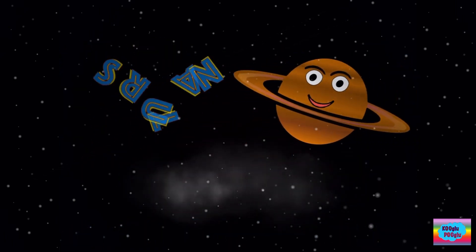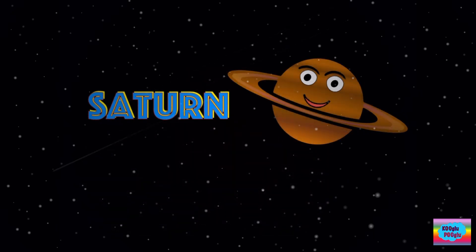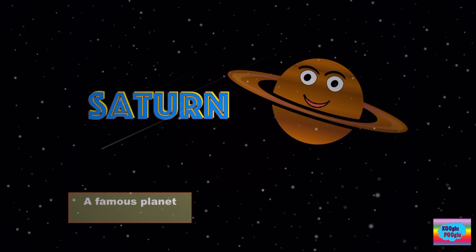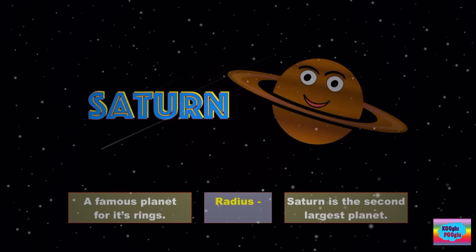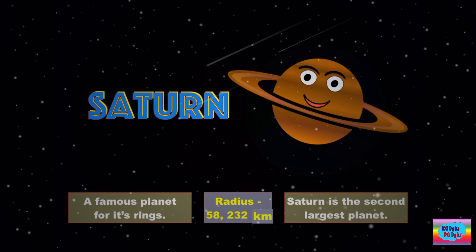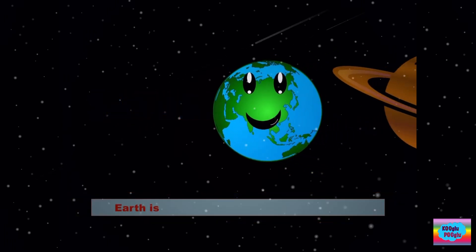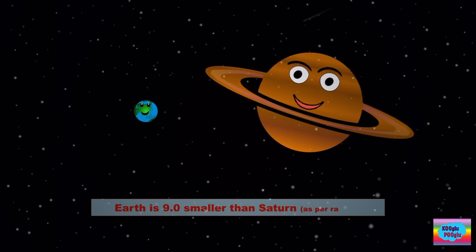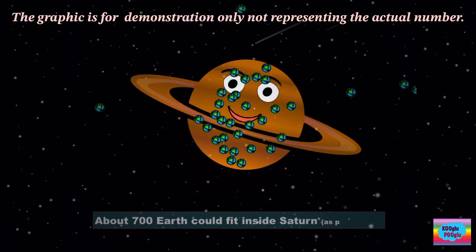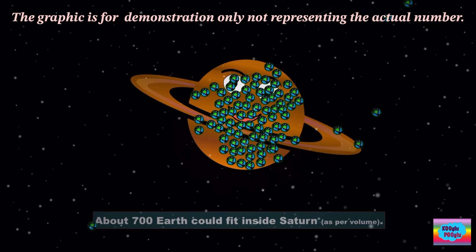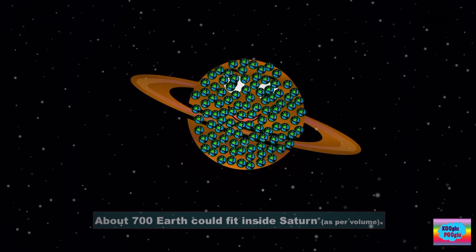Planet 7, Saturn. Hello! I am famous for my rings. Saturn is the second largest planet. I am really big. Radius 58,232 kilometers. Earth is nine times smaller than Saturn. About 700 Earths could fit inside Saturn. Whoa, that is a lot.